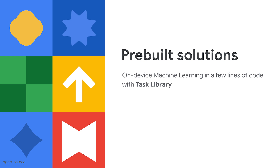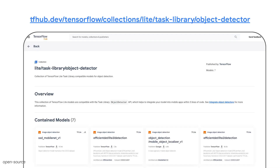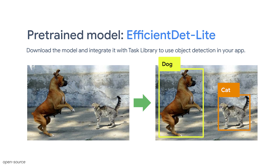Assume you want your app to detect general objects like cats or dogs. The simplest way to get started is to download a pre-trained model from the Task Library's model collection on TensorFlow Hub. In this example, we choose EfficientDet Lite, the state-of-the-art detection model developed for on-device use cases. It is trained on the COCO dataset and can recognize 80 types of different objects like dog, cat, keyboard, and television. The model takes an image as input and returns a list of recognized objects together with their locations in the image.